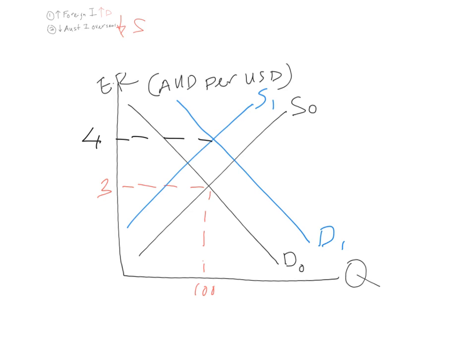The change in quantity depends on whether the demand curve shifts by more than the supply curve. In the way I drew it, there's no change in the quantity traded. If you had drawn the demand shift further, you'd get an increase in quantity; if the supply decrease was smaller, a similar result. What is important is that you understand the currency goes up — the currency appreciated. The exact quantity change is not so important; what matters is that the currency became stronger.